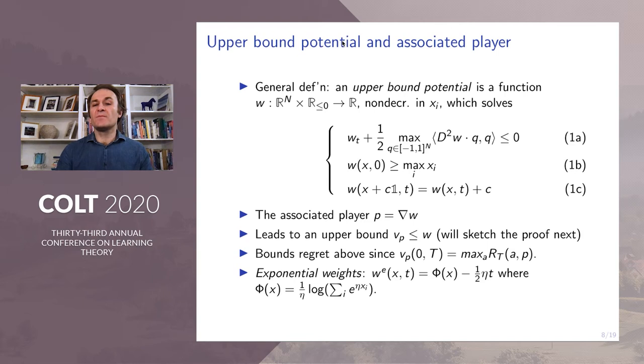Our general definition of an upper bound potential is a function that solves this PDE. The first inequality is there to ensure that w does not increase as the game evolves. The second inequality ensures that the potential w bounds the regret at final time. Lastly, the equality ensures that w is linear in the direction of the vector of all ones. This is reasonable because the max function is also linear in the direction of the vector of all ones.